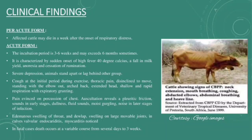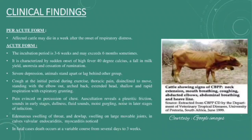Let us discuss about the clinical findings of this disease. There are four forms. Number one is the peracute form: the affected cattle may die within a week after onset of respiratory distress. Number two is the acute form, with an incubation period of three to six weeks. It is characterized by onset of high fever, a fall in milk yield, anorexia, and cessation of rumination. Severe depression is observed. Animals stand apart or lag behind the group. Coughing at initial period during exercise. Thoracic pain. Disinclined to move. Standing with the elbow out and arched back condition.